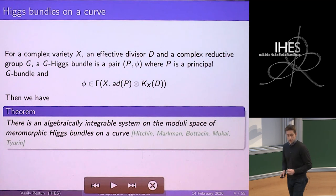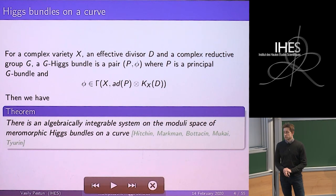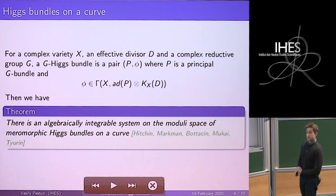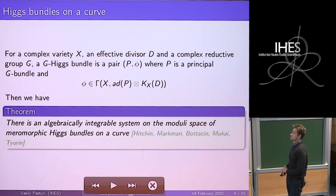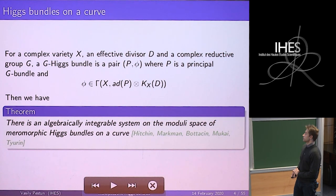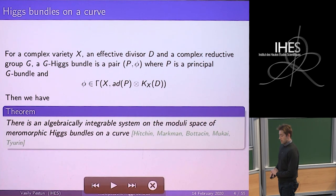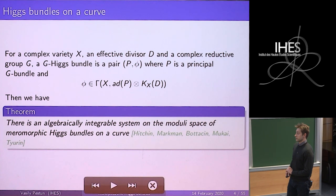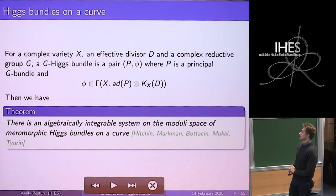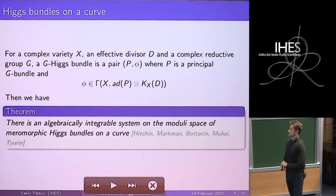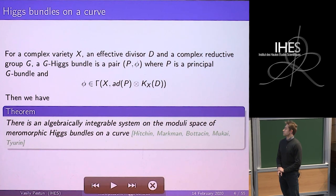The topic of today's lecture would be a group version of a Hitchin system. To start, let's recall what a Hitchin system is. For a complex variety X, an effective divisor D on that complex variety, and complex reductive group G, a G-Higgs bundle would be a pair (P, φ), where P is a principal G-bundle and φ, called the Higgs field or Hitchin field, is a section of the adjoint-valued bundle valued in the Lie algebra, usually tensored with the canonical line bundle on X with singularity set D. There is a theorem going back to Hitchin, Markman, Bottacin, Mukai, and others, that there is an algebraically integrable system on the moduli space of meromorphic Higgs bundles on a curve — the Hitchin system.